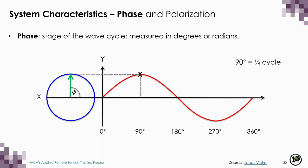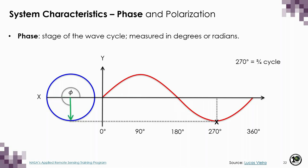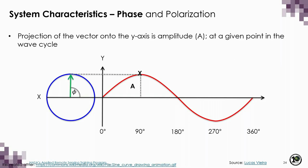We can use the relationship between circles and sine waves to measure the phase — the stage of the wave cycle. Because one complete rotation of the vector draws out the equivalent of one complete wave cycle, we can express phase in degrees using the angle between the vector and the horizontal x-axis, represented by the Greek letter phi (φ). One quarter of a wave cycle corresponds to 90 degrees, half a cycle to 180 degrees, three quarters to 270 degrees, and a full cycle to 360 degrees.